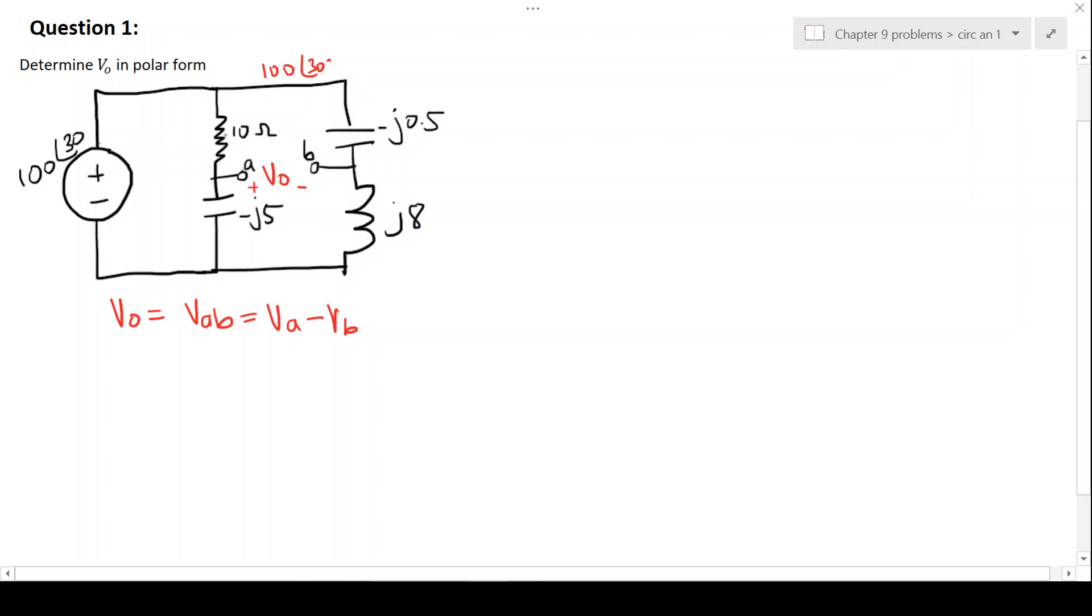So we could use voltage division to see what the split there is where VA will be the voltage over the negative J5. Same on this branch where VB will be the voltage over the J8.